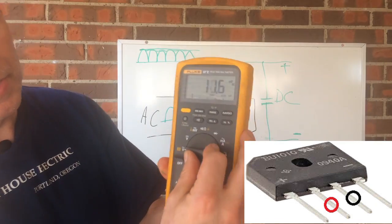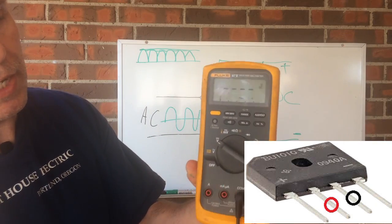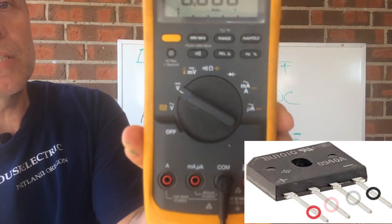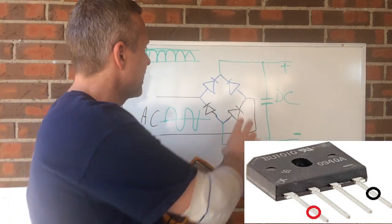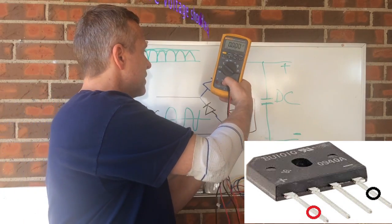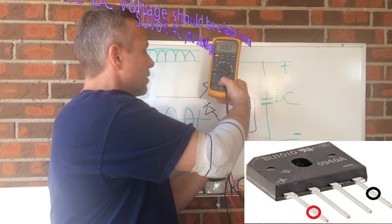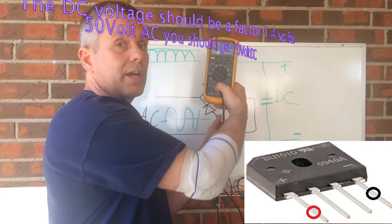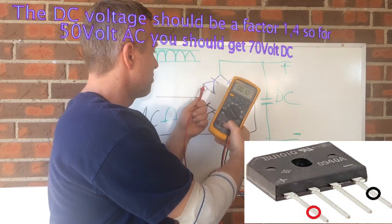Then what you will do is that you take the meter and turn it up into DC. Because that's what's coming out of the rectifier after this. And then you measure here on your plus and minus.